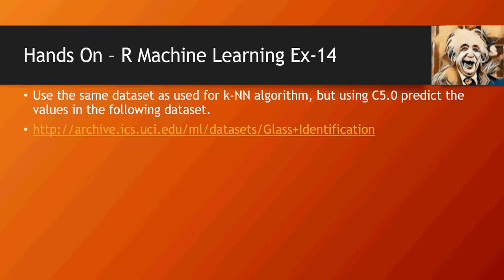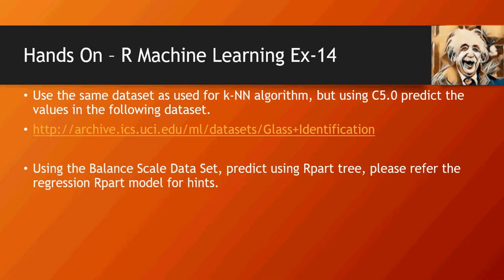Remember the glass identification dataset, which is available on this link. Figure out what values it predicts using C5.0. Also, using the balance scale dataset, which we have used for both KNN and C5.0 predictions, predict using the RPART decision tree.